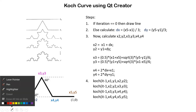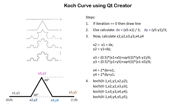We have to implement this Koch Curve in QtCreator. To draw the Koch Curve we have given x1 and x5. So the first step is to calculate dx. dx is the distance between x1 and x5. So dx is calculated as x5 minus x1 divided by 3, because we are dividing every single line segment into three equal parts.